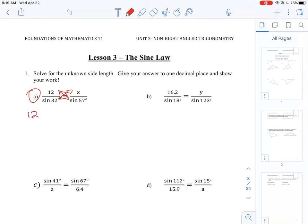So this is going to reduce the equation to 12 times sine of 57 degrees is equal to x times sine of 32 degrees.